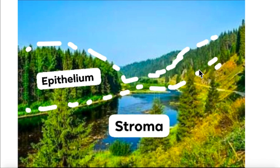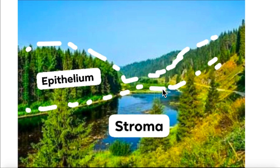By measuring the epithelium, we will have the reality of the real topography of the stroma, which is the most important tissue in the cornea, because keratoconus is a stromal illness. We can measure from the stroma itself. In this example, if we measure with a topographer we'll see a steep area here and a flat area here; but if we measure with OCT, we see a flat area here and a steep area here. That shows the importance of measuring the epithelium with OCT and doing the subtraction to reveal the real shape of the stroma.